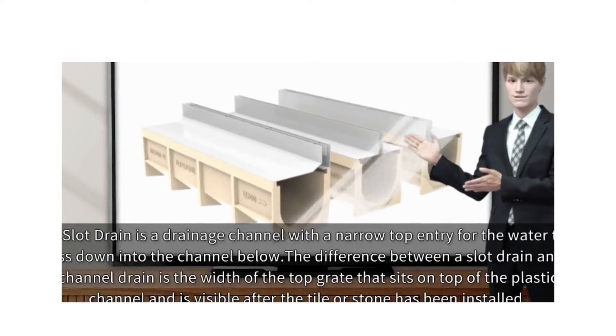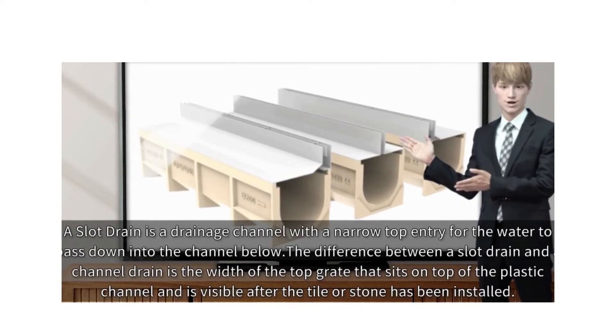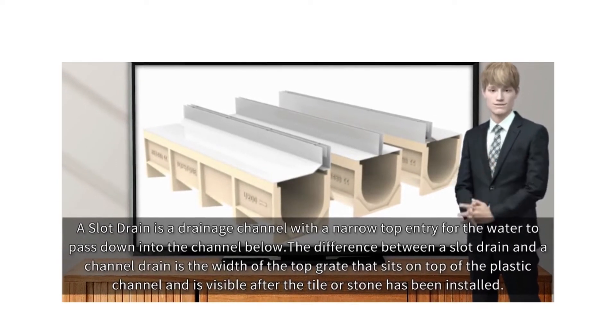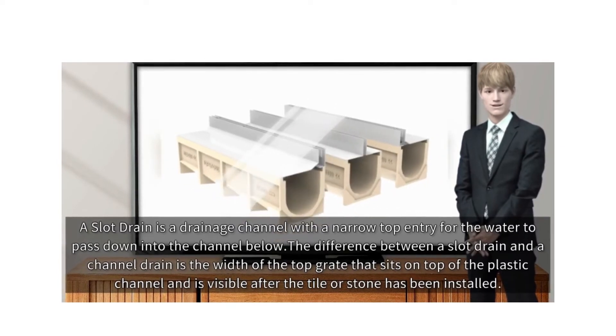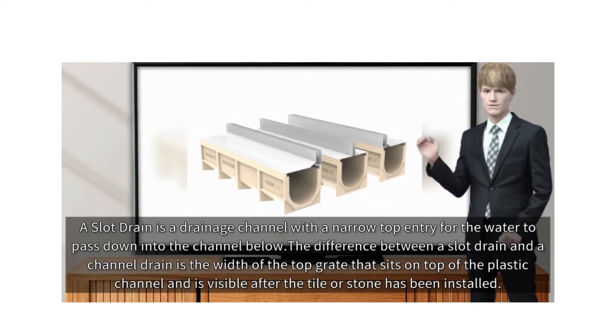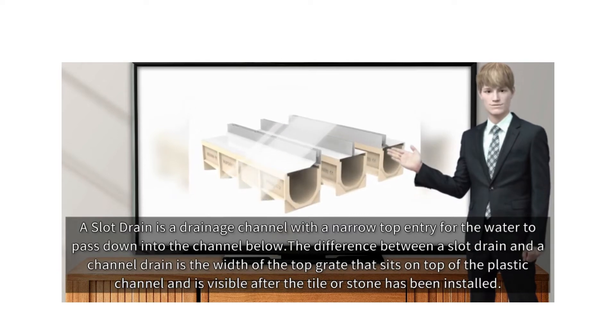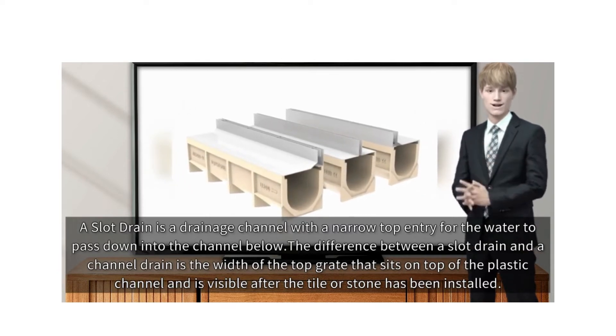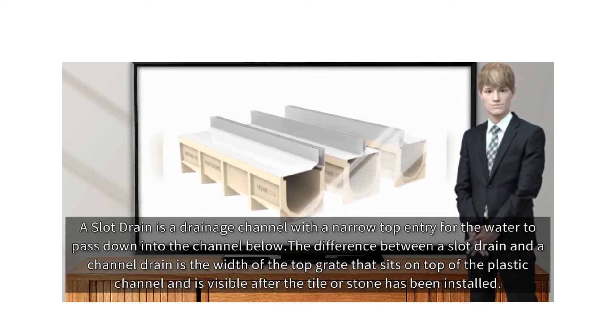A slot drain is a drainage channel with a narrow top entry for the water to pass down into the channel below. The difference between a slot drain and a channel drain is the width of the top grate that sits on top of the plastic channel and is visible after the tile or stone has been installed.